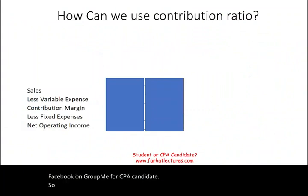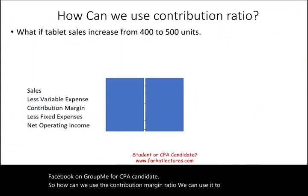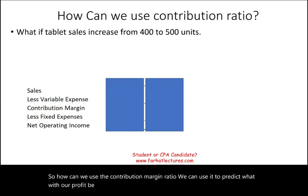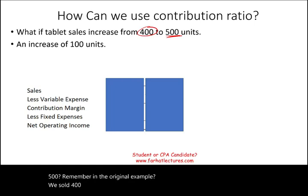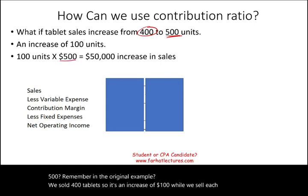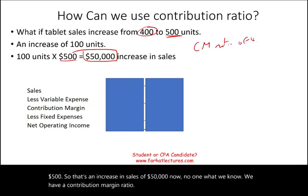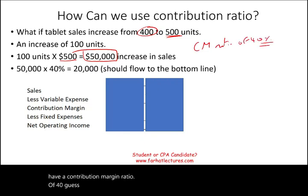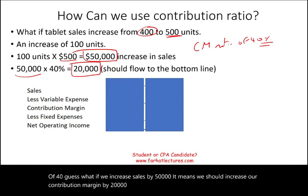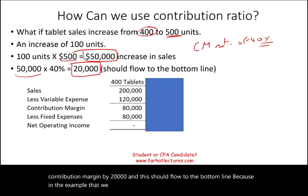So how can we use the contribution margin ratio? We can use it to predict what our profit would be if things change. What if tablet sales increase from 400 to 500? That's an increase of 100 tablets. We sell each tablet for $500, so that's an increase in sales of $50,000. Knowing that we have a contribution margin ratio of 40%, if we increase sales by $50,000, we should increase our contribution margin by $20,000. This should flow to the bottom line because in our example we already covered the fixed expense.